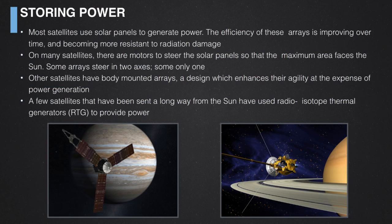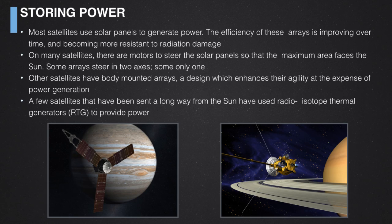The NASA Juno mission, currently heading out to Jupiter, has solar panels — it's the first mission beyond Mars to use them, a consequence of improving technology. All previous missions to the outer solar system have used radioisotope thermal generators to create power, a technology with limitations not least in the supply of radioactive material, which decays, generates heat, and is used to power the spacecraft.